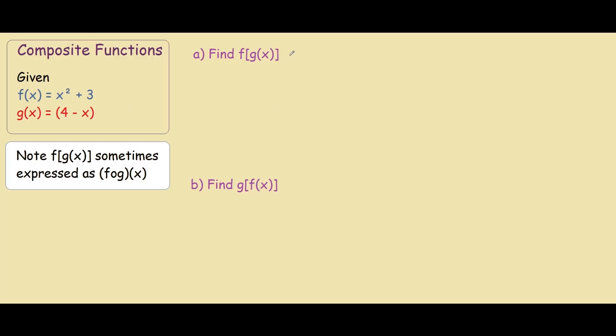So I'll demonstrate how to do this. First of all, look at our g function. And we want to substitute this into our f function. So wherever you see x's in our f function, you replace it with 4 minus x. So instead of x squared, we would have 4 minus x squared plus 3.